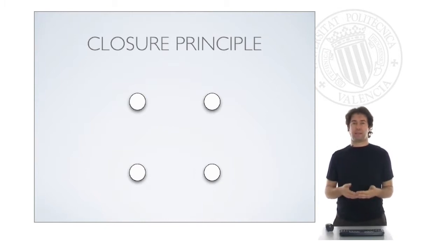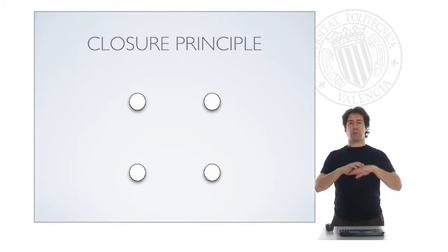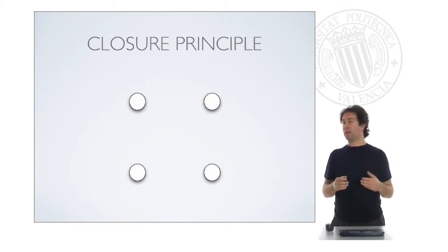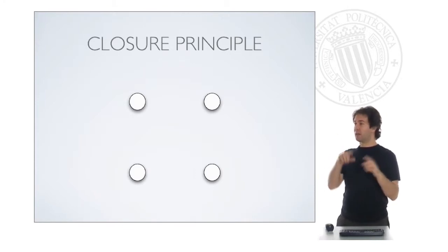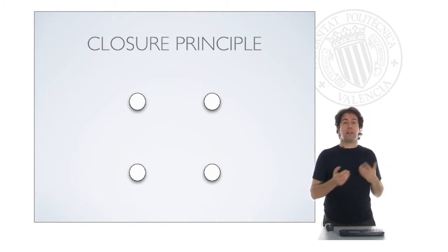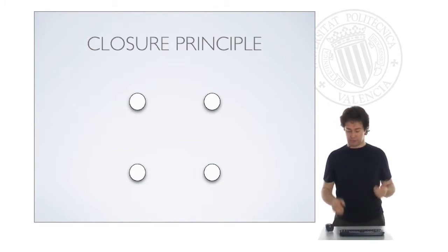The Closure Principle means exactly that. When we have different elements of information and we see them as a whole, then we infer, we add information that makes us have a sense of what is going on. It's easier for us to understand that these four circles are a square, than imagining, for example, that we have a triangle in the upper part and then an isolated circle. That would make no sense. We prefer to see the square.